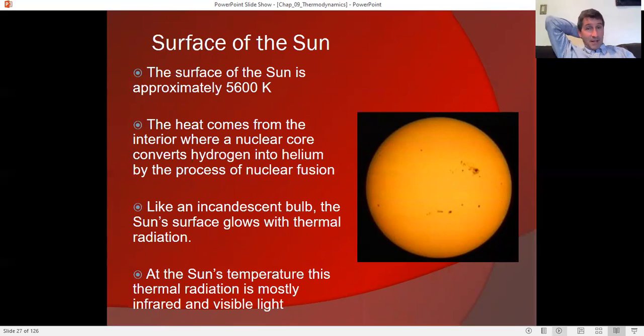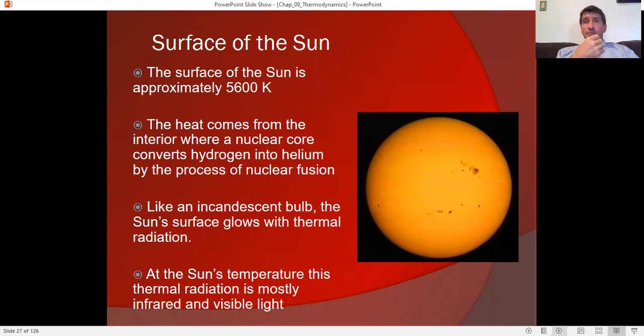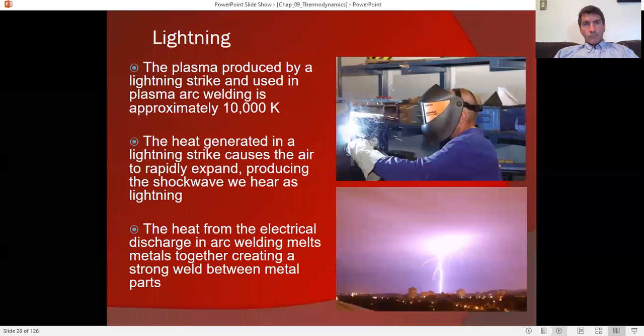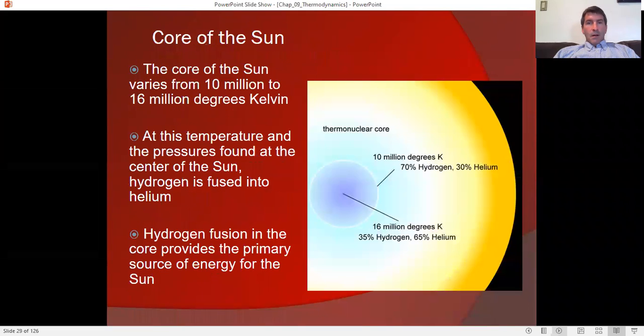The sun. You wouldn't want to visit the sun. Not only is the surface of the sun incredibly hot, lots of radiation, the gravity would crush you on the surface of the sun. You'd vaporize instantly. At 5,600 degrees Kelvin, it glows mainly in the visible because of its very high temperature. Lightning is actually hotter. Both plasma arc welding and lightning is about twice as hot as the surface of the sun, about 10,000 degrees Kelvin as opposed to 6,000 degrees.